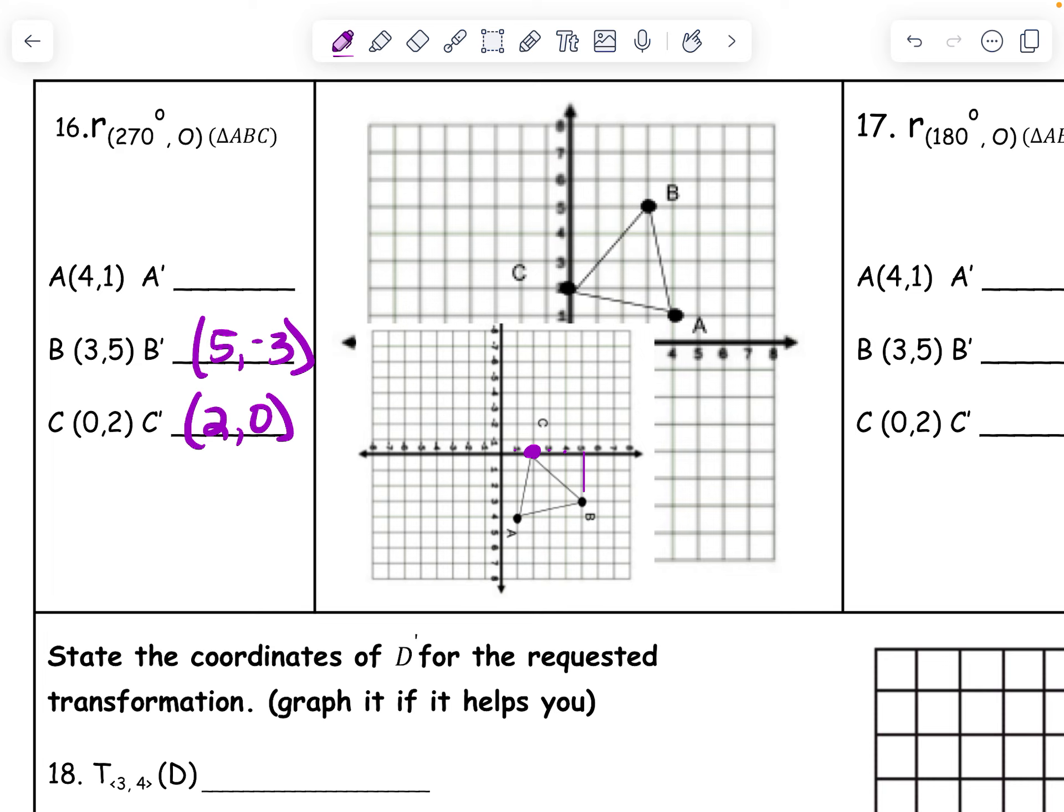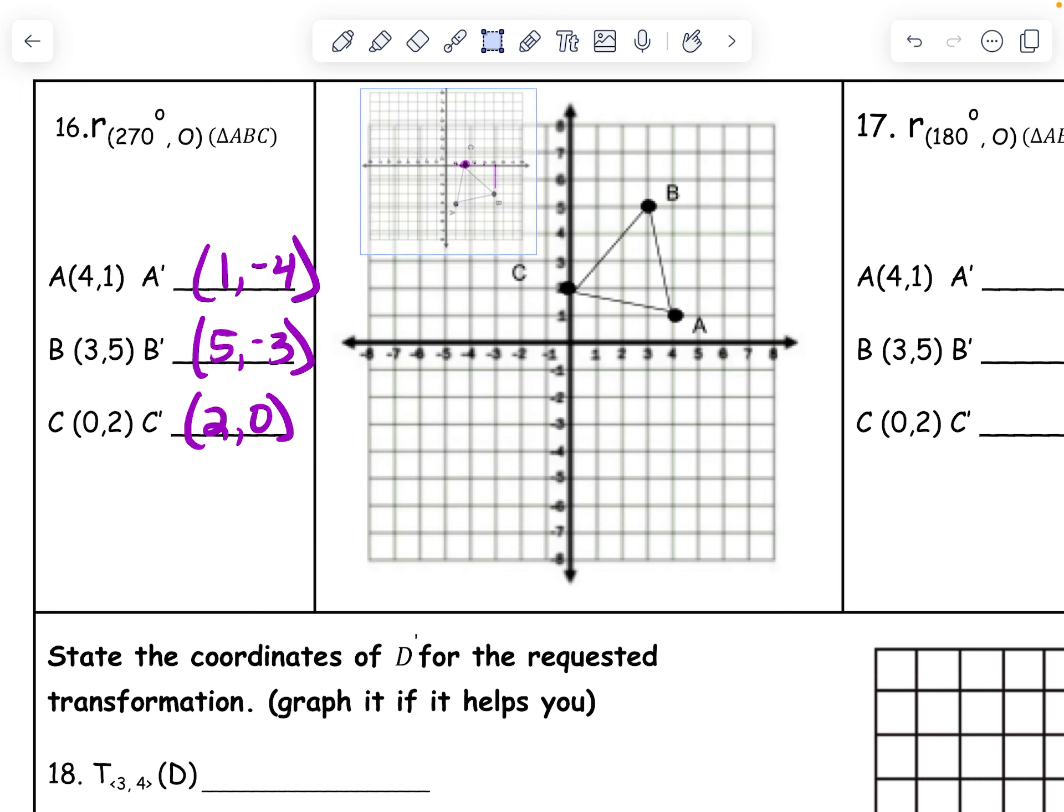And my new a is at 1, negative 4. So if you rotated your paper, that is how you can find what those are, right?